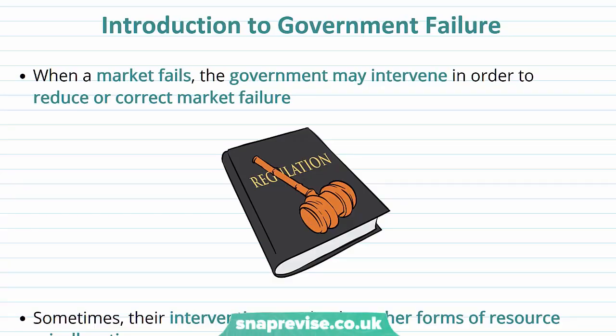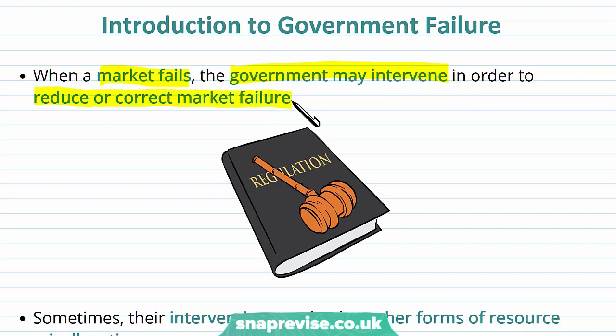Let's imagine that we are a government and that we are observing some kind of market failure, and we would want to do something about this. Governments are really the only large enough economic agent that can address market failure, as they're the only agent which is sufficiently large enough to make some kind of impact or change the market. So when a market is failing, our government may intervene in order to reduce or correct market failure.